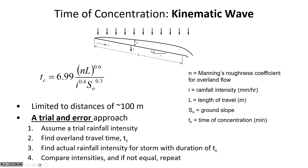We start with a guess — maybe 10 or 20 minutes — then go to the IDF table to look up the rainfall intensity for that guess. We use that intensity to find the actual time of concentration. If the result differs significantly from the initial guess, we find a new rainfall intensity, put it back into the kinematic wave equation, and iterate until the solution converges — no further changes in rainfall intensity or time of concentration.